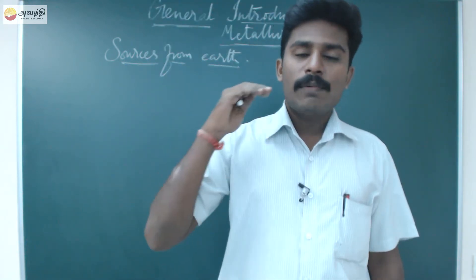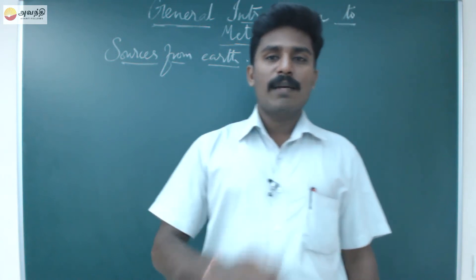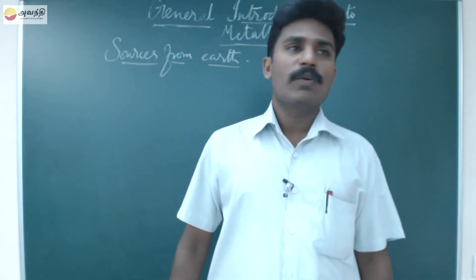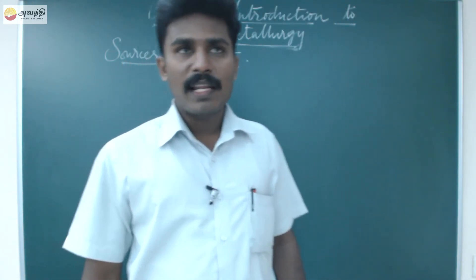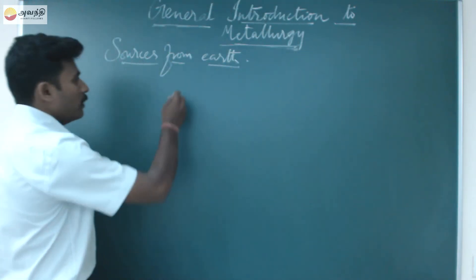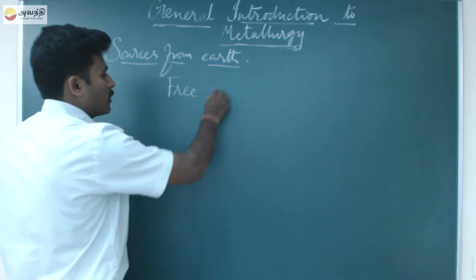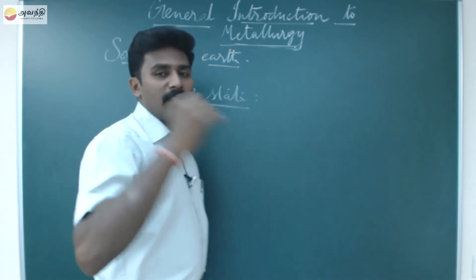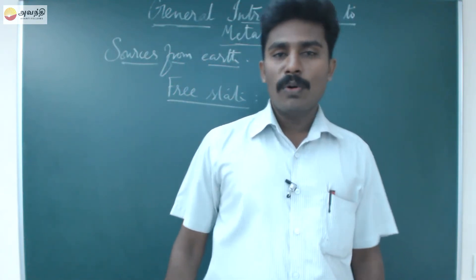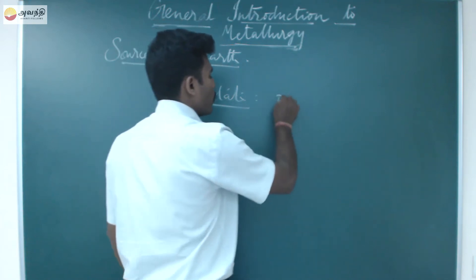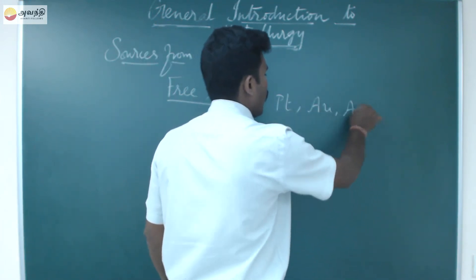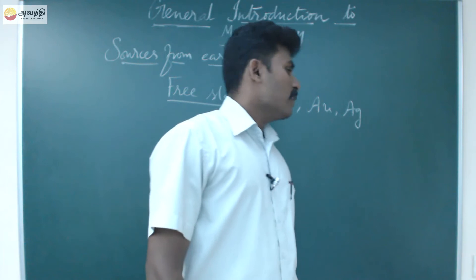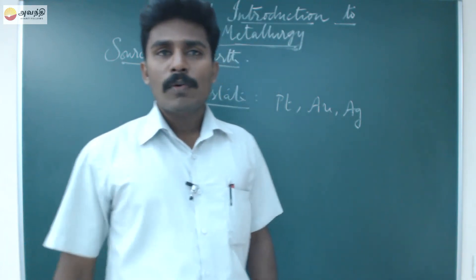Now in the class we have 80 elements. What is free state? Not in combined state. The second and third row of D-block elements — Platinum, Gold, and Silver — are present in free state, also called native form. Gold's Latin name is Aurum (Au), and Silver's Latin name is Argentum (Ag). These are the elements present in free state.